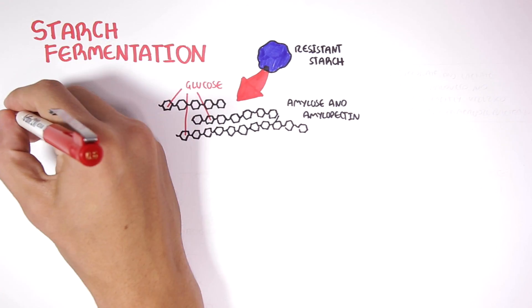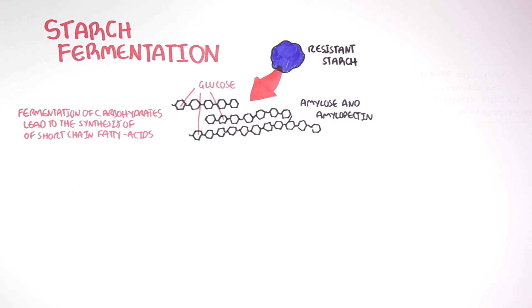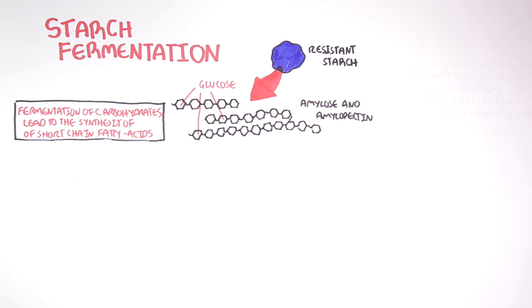Fermentation of carbohydrates, such as resistant starch, leads to the production of short-chain fatty acids. Let us look at a simple pathway of how these short-chain fatty acids are produced.